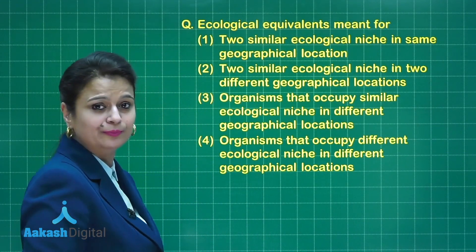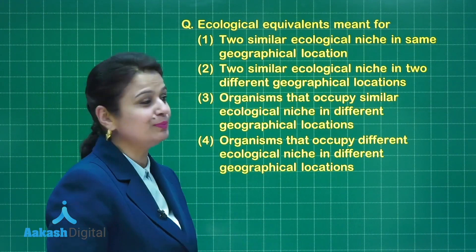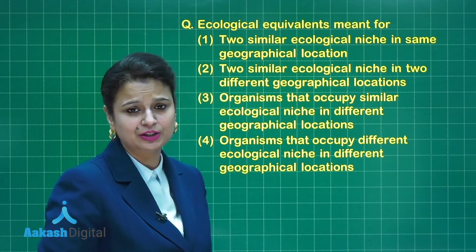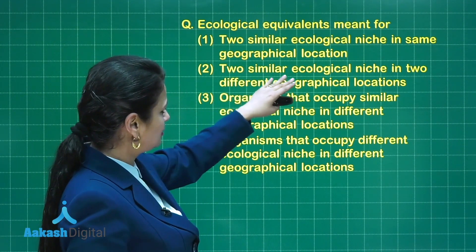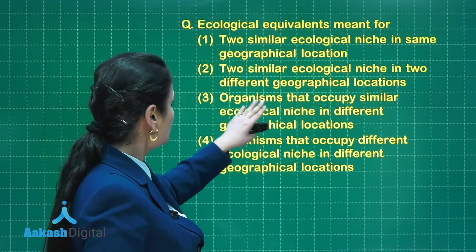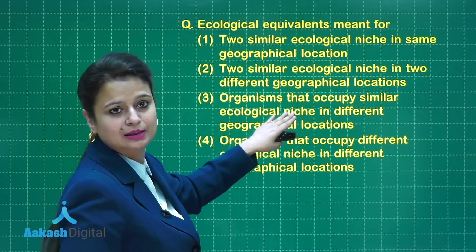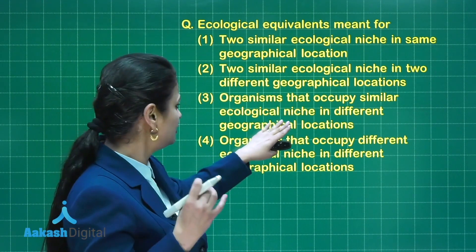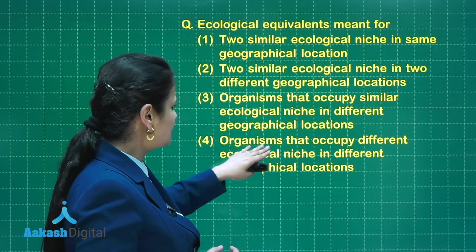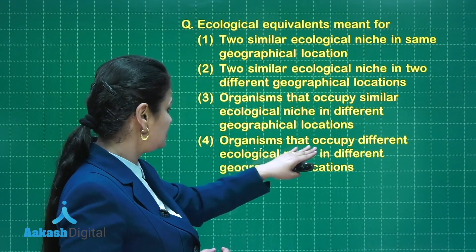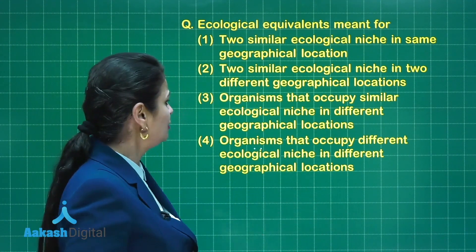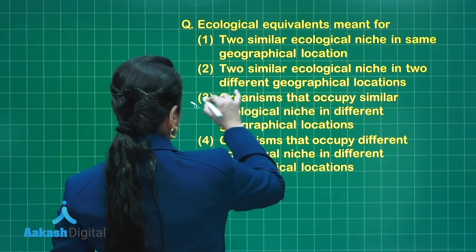Organisms that have the same functional niche but different spatial niches are called ecological equivalents. Let's check with a question: ecological equivalents means — two similar niches in the same geographical location? Wrong. Two similar niches in two different geographical locations? Wrong. Organisms occupying similar ecological niches but in different geographical locations? That's correct. So the right answer is option three.